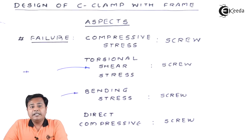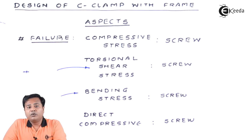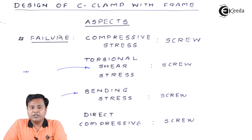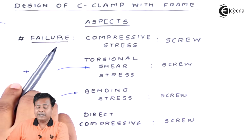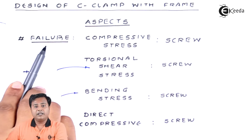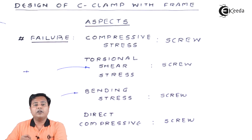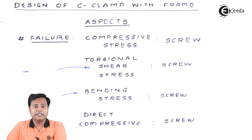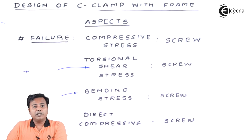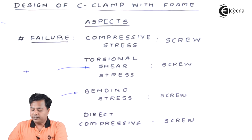C-clamp design is important because we need to learn its aspects and then we will go for its formulation. On the screen you can see there are different failure methods. We know that whenever we need to learn design, we need to learn the failure methods first. So let us look at the failure methods of C-clamp very initially and then we will move ahead.